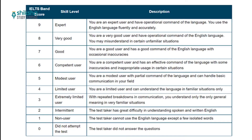A band score of 9 means you are an expert in English and use the language fluently and accurately. Band 8 means you are a very good user with operational command of English, but may misunderstand in some unfamiliar situations. Band 7 is a good score, meaning you have good command of English with occasional inaccuracies. Band 6 means you are a competent user with effective command but some inaccuracies and inappropriate usage in certain situations.